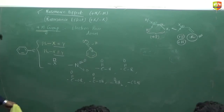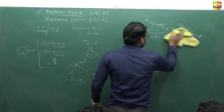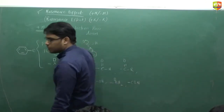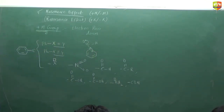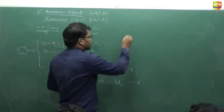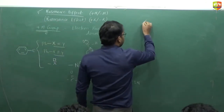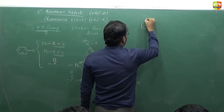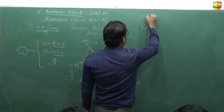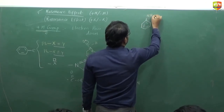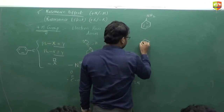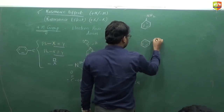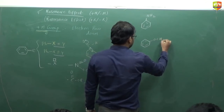Now let's do some examples. You have to identify what all effects are possible for each group attached to the benzene ring, and determine which one is dominating. Groups to analyze: –NH2, –OCH3, and –C=O.